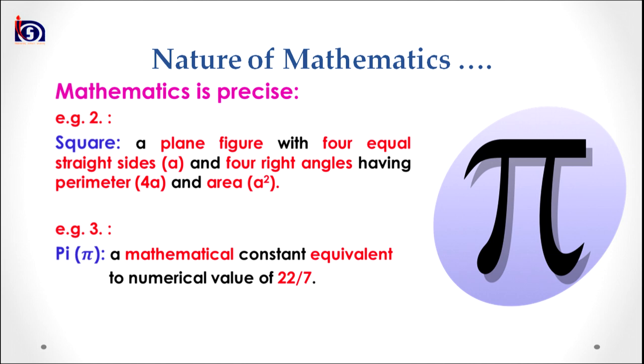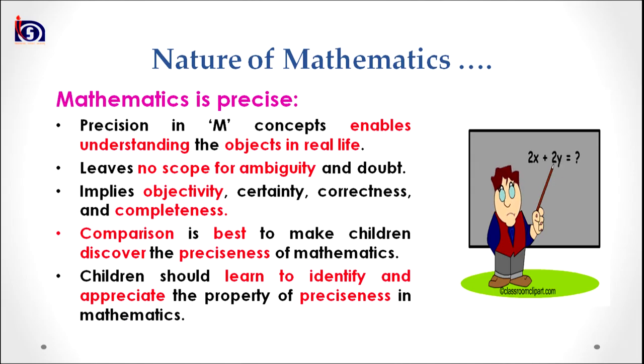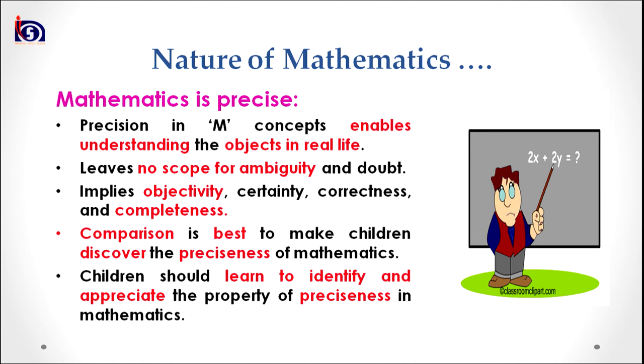Look at example three on your screen, where I have defined pi. Pi is a mathematical constant which has an equivalent numerical value of 22/7. This gives a clear and exact definition of what pi is. Therefore it can be said that mathematics is precise in its nature. Precision in mathematical concepts enables understanding of objects in real life more clearly and accurately. Precision leaves no scope for ambiguity and doubt.